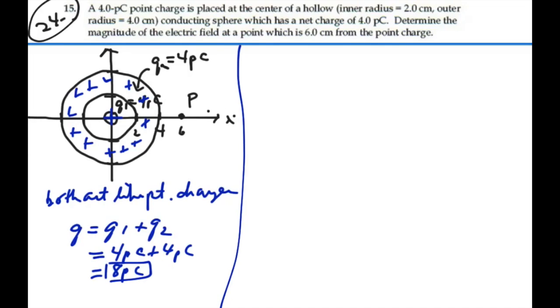And now our total electric field will just act like a point charge. E will be equal to KQ over R squared, and that is going to be nine times ten to the nine times eight picocoulombs, eight times ten to the minus twelve. Our R is going to be our distance from where we're locating these charges, which will be from the center, so it's going to be six centimeters.